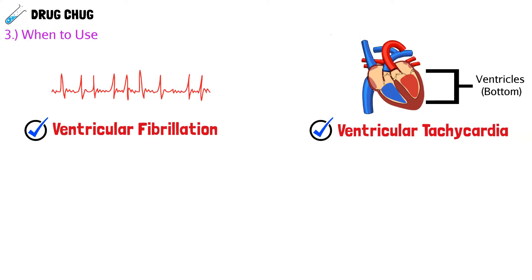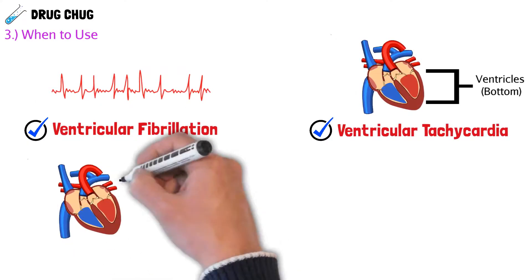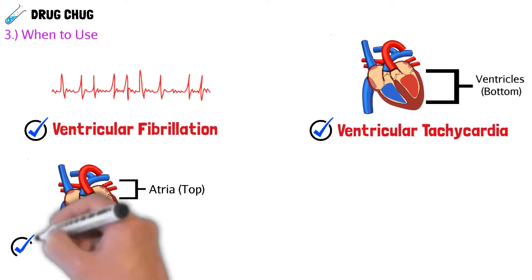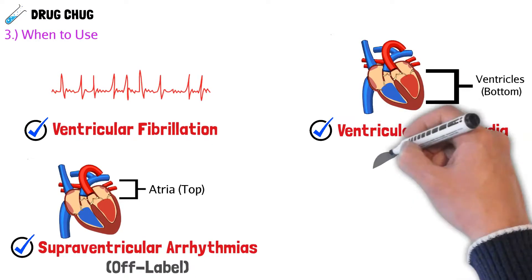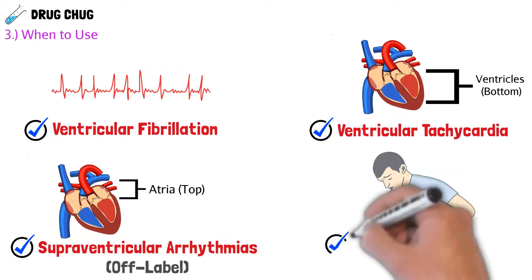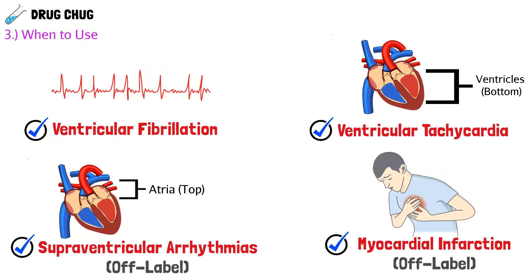We do see some off-label uses with amiodarone. Patients that have supraventricular arrhythmias — that just means above the ventricles, so the atria — can be treated with amiodarone, but this is more off-label. We also see some patients that had a heart attack, a myocardial infarction, be put on amiodarone as well, but again this is also off-label, so you won't see this as much.